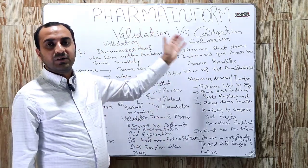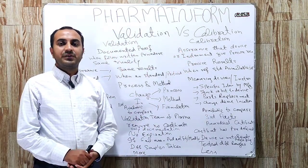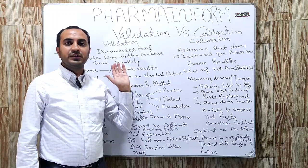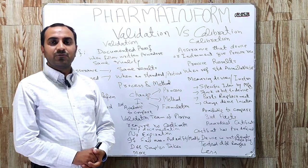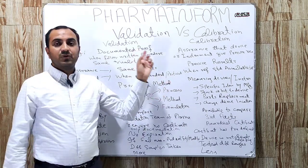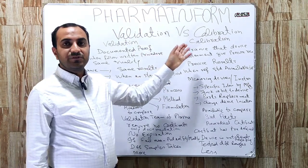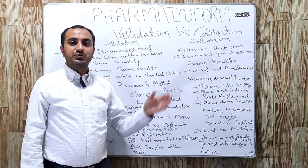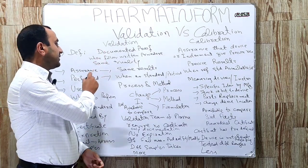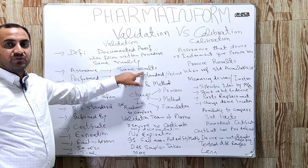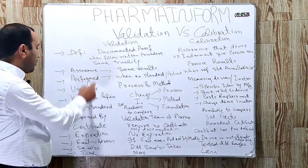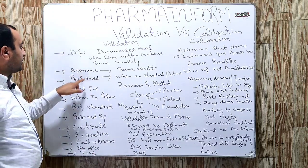The first difference is based on the general definition. Validation is documented proof which shows that by following specific written procedures, the same quality of product is obtained. Calibration provides assurance that the device or instrument used will provide precise results. So validation gives assurance of same results or same quality, and calibration gives assurance of precise results.